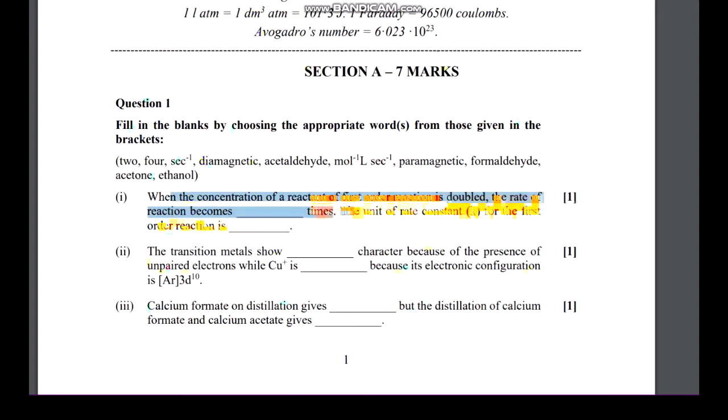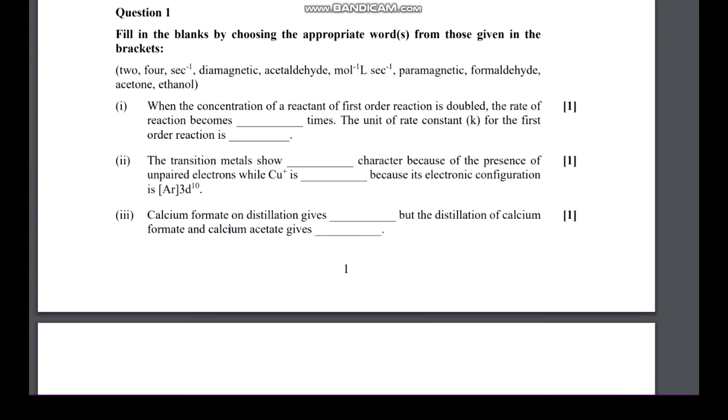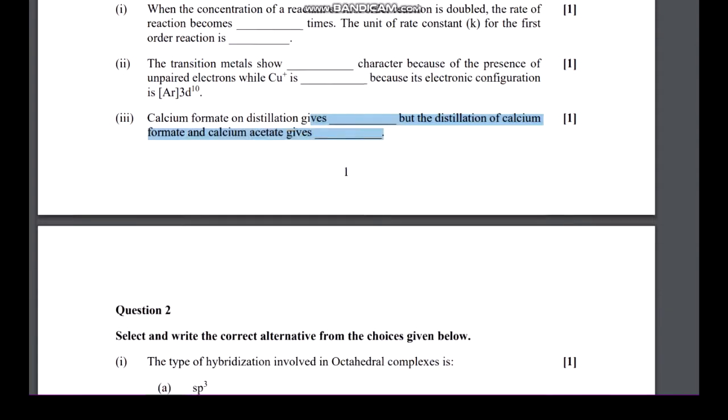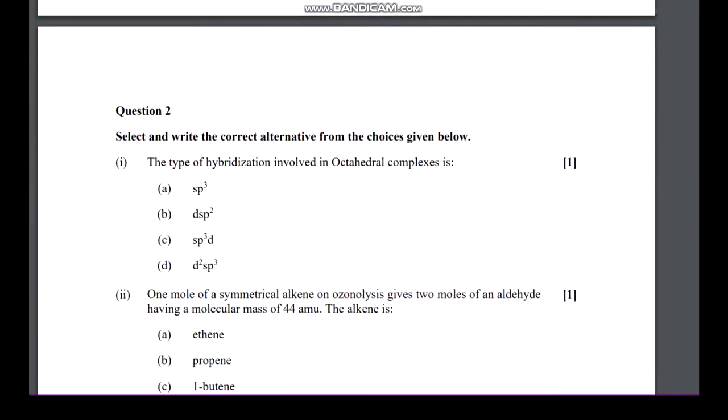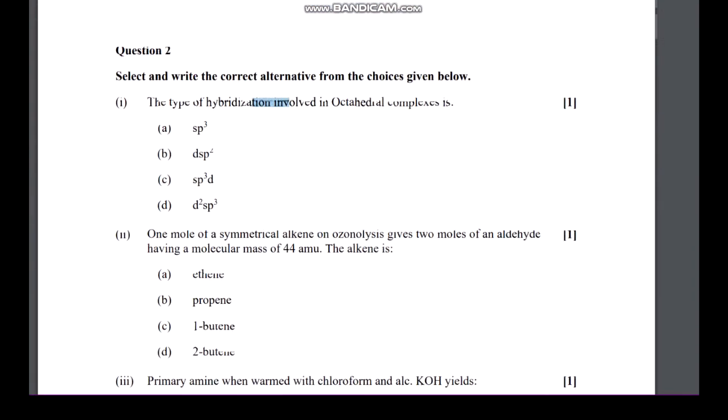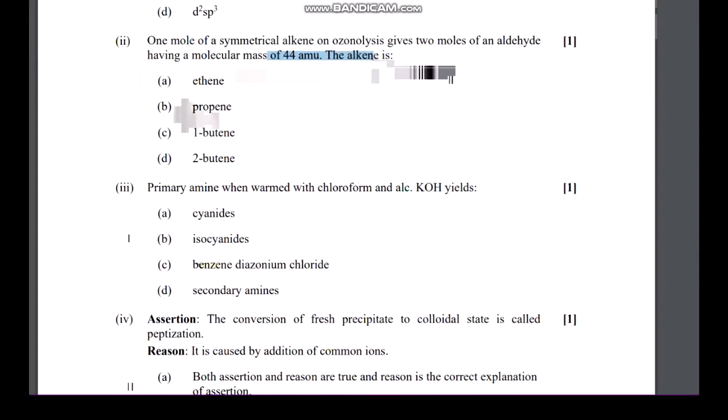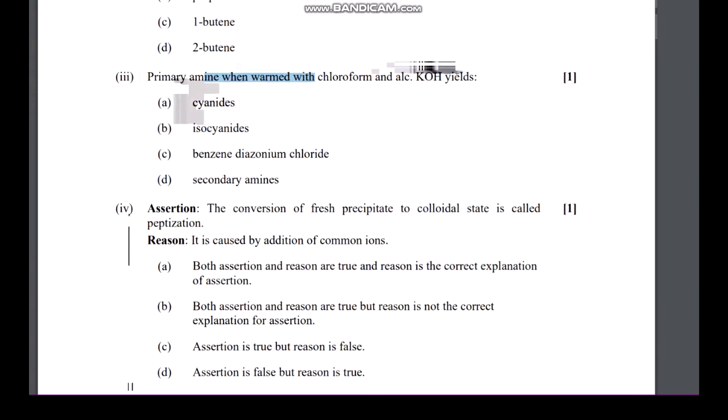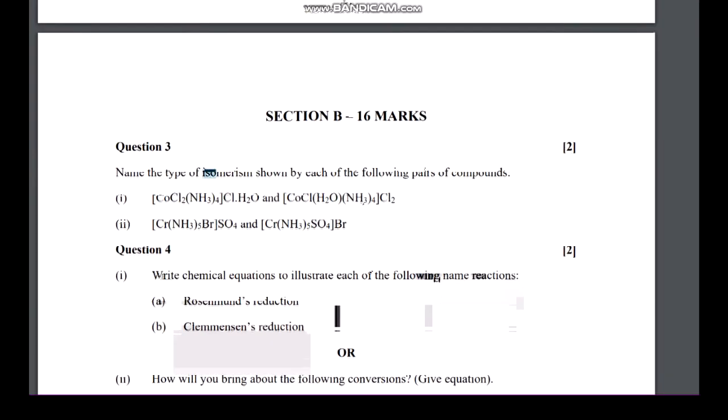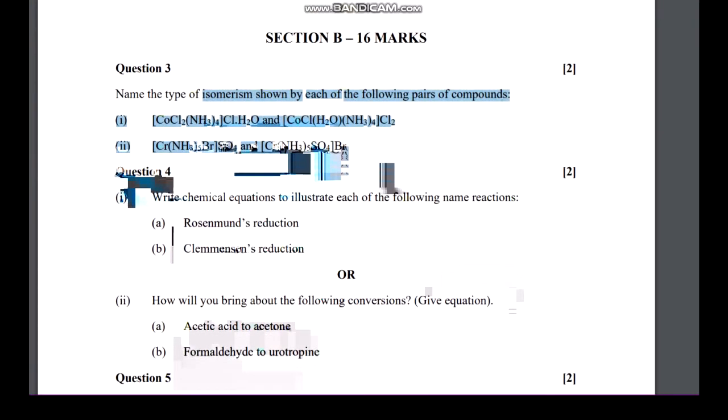Here in the specimen paper, first question is from chemical kinetics, second from d-f block. Then calcium formate on distillation gives dash - distillation of calcium formate and calcium acetate gives this. This is a general reaction type question. Then hybridization, atomic orbital theory type question, then ozonolysis - organic amine nitrogen.